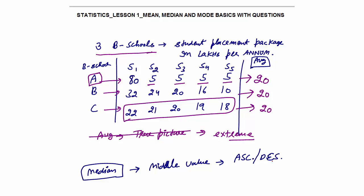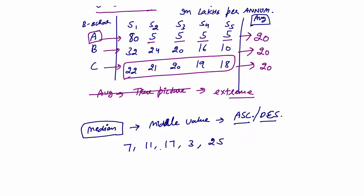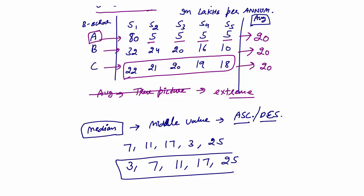Let's say this is B-school D with packages in lakhs per annum: 7, 11, 17, 3, and 25. First, I arrange the data in ascending order: 3, 7, 11, 17, 25. The middle value is 11. So the median salary is 11 lakhs per annum. Median also measures the central tendency or central value of the entire data. Both median and mean are used to find the central value.